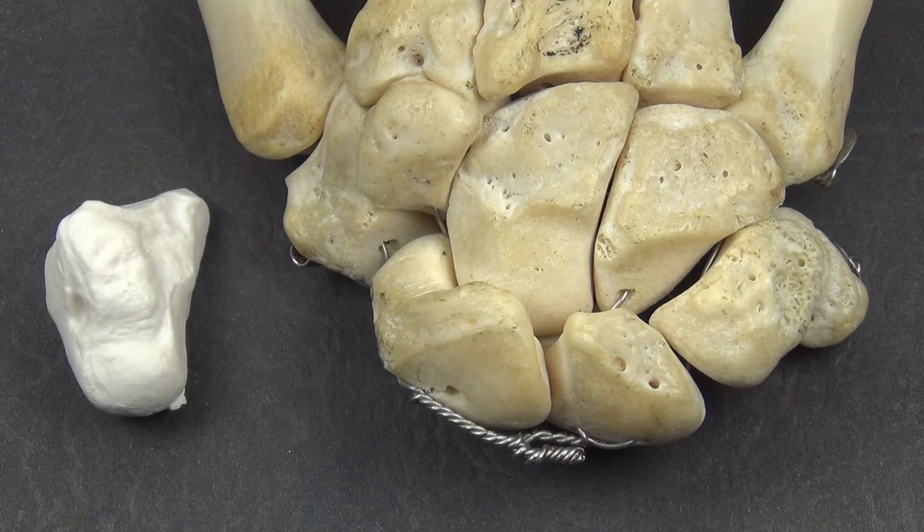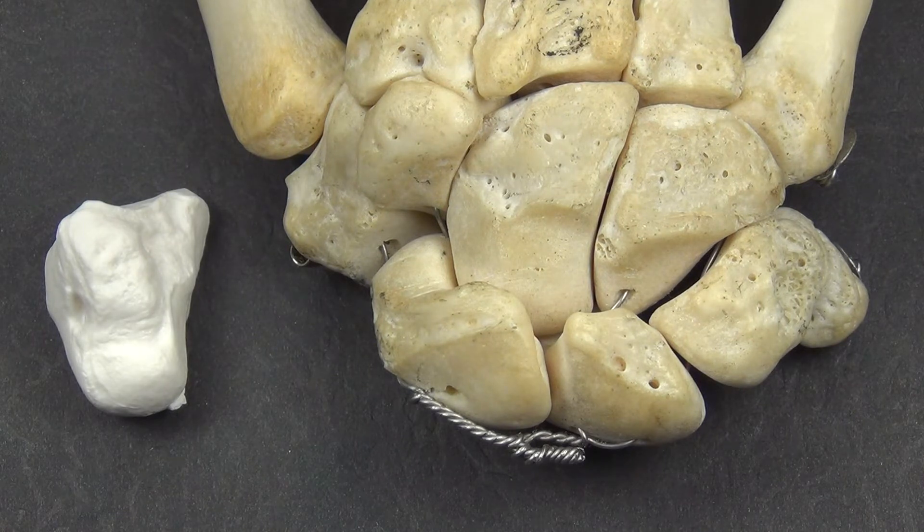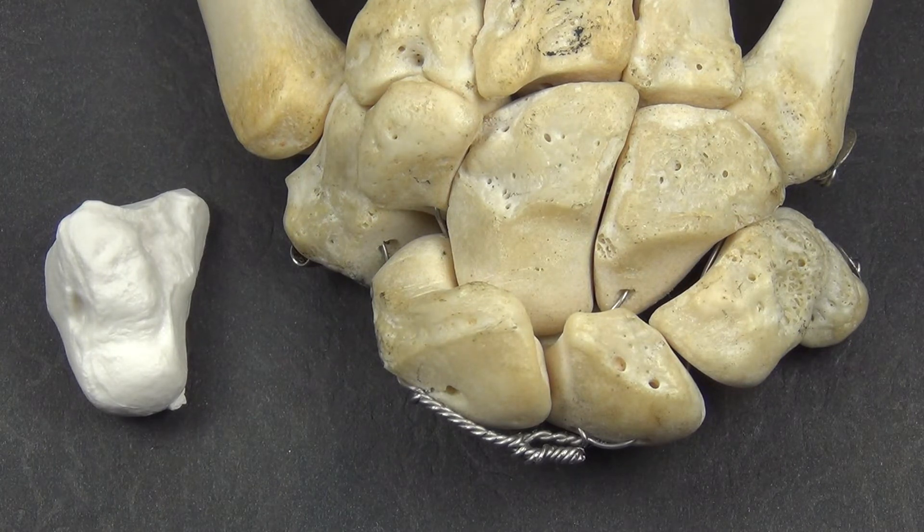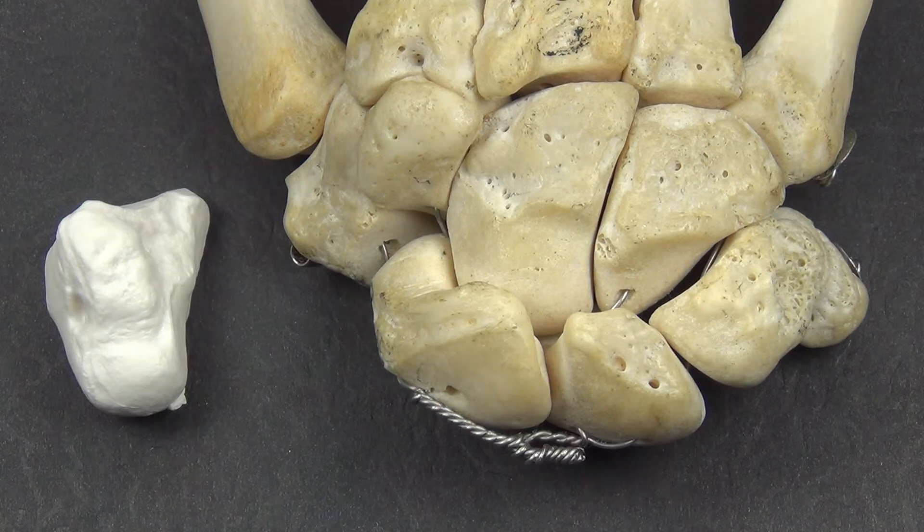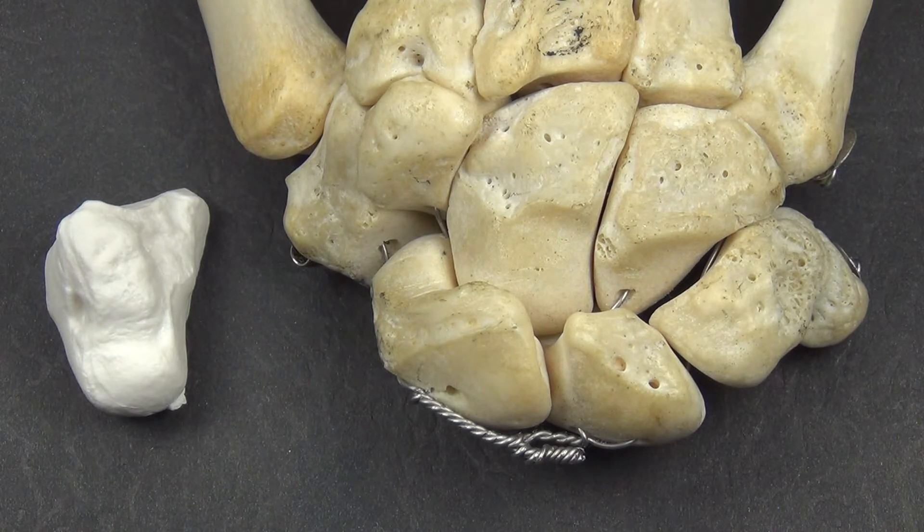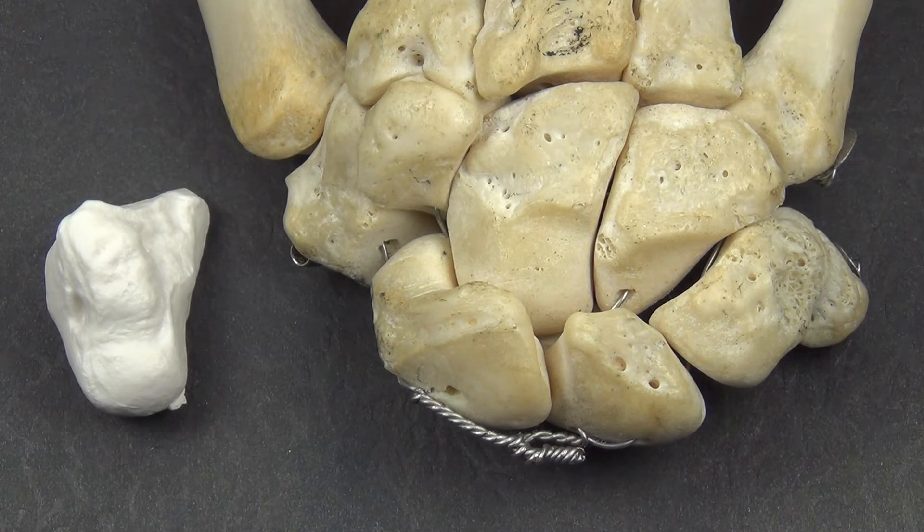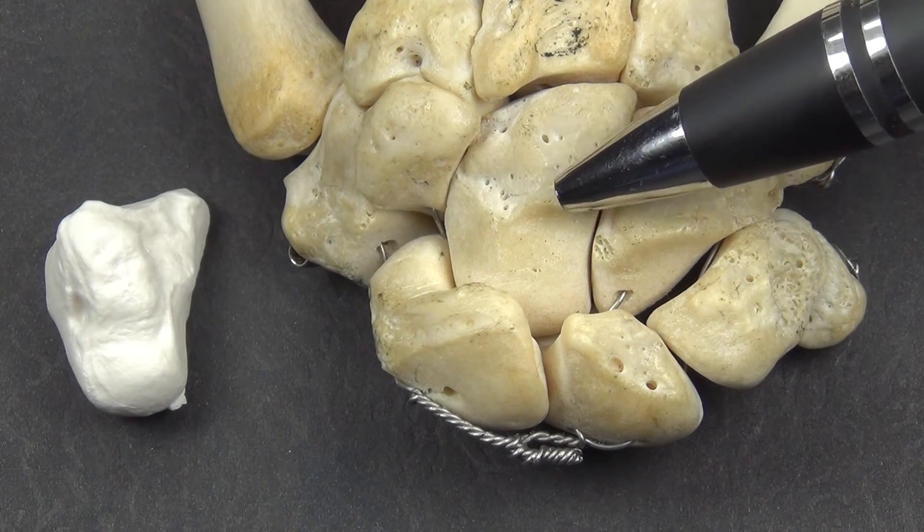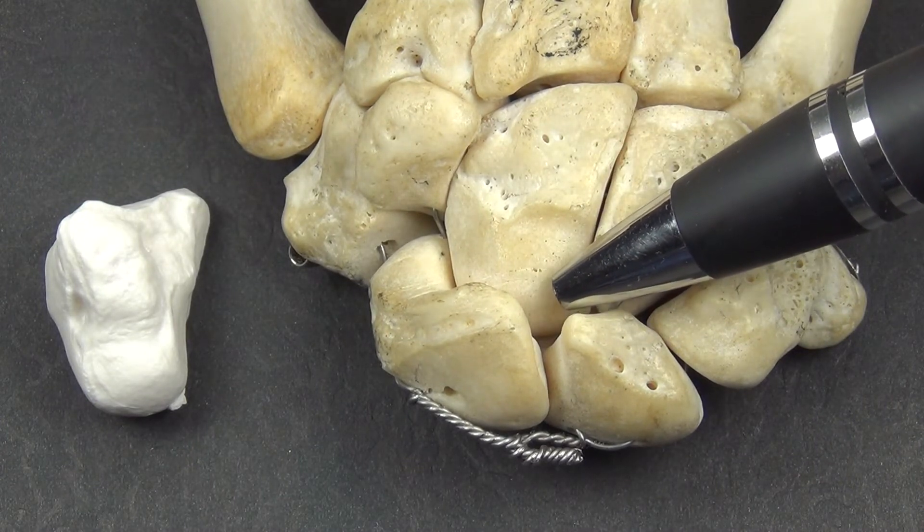The capitate receives blood supply from the dorsal intracarpal and dorsal basal metacarpal arches, as well as the ulnar recurrent artery and the palmar intracarpal arch. Blood enters from the two non-articular areas, the dorsal and palmar surfaces. The dorsal and palmar vessels anastomose in about 30% of people. Most vessels enter the distal portion of the bone and then supply the proximal pole in a retrograde fashion, similar to the scaphoid.